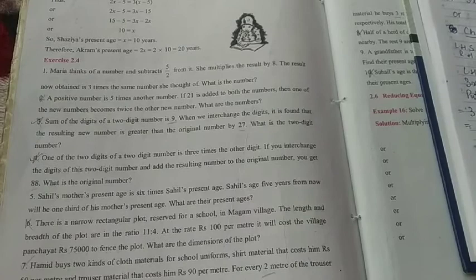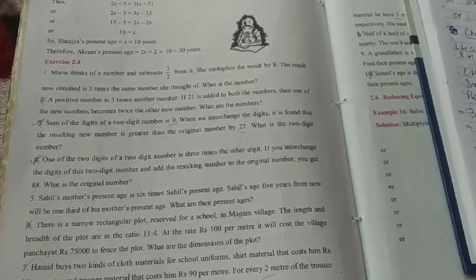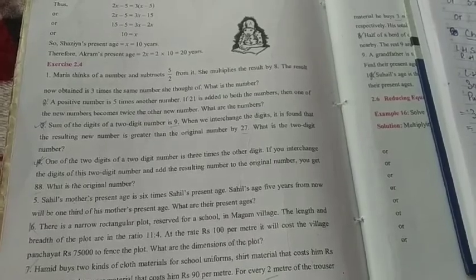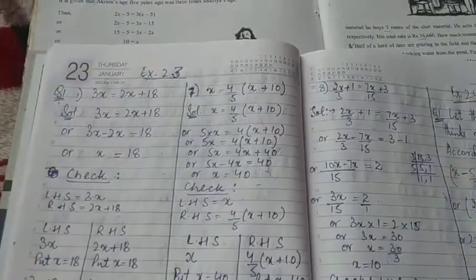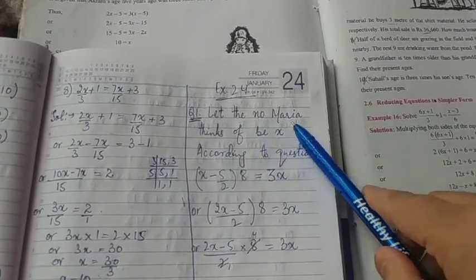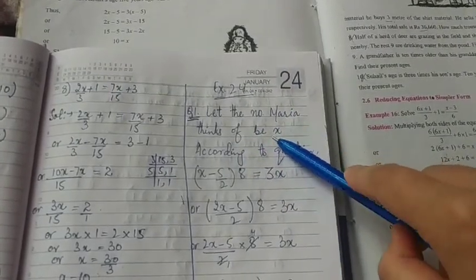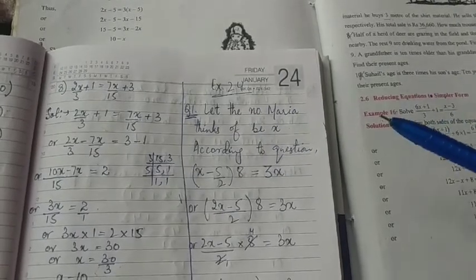So we don't know that number and we have to find that number. So what we will do, we will assume that number. As I have written here, let the number Maria thinks of be x. So I am letting that number be x. Now what is my condition?